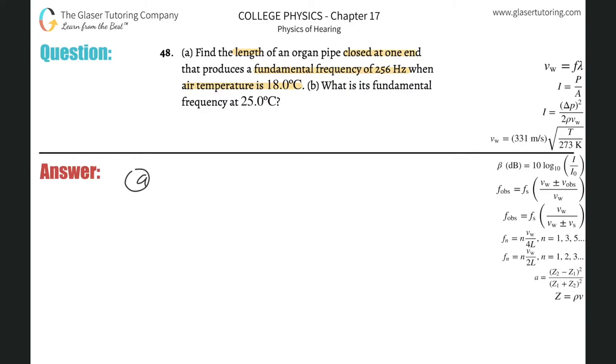Now we know we have a pipe closed at one end, so we choose that formula, where the frequency of the nth harmonic equals the nth harmonic multiplied by the velocity of sound divided by 4L. And the harmonics can be the first harmonic, the third harmonic, the fifth harmonic. Notice how it's odd number harmonics.